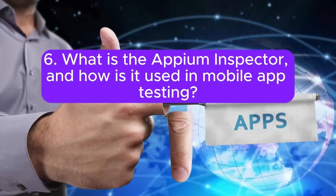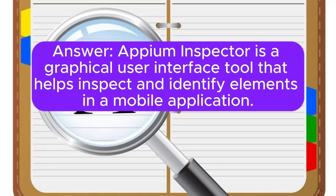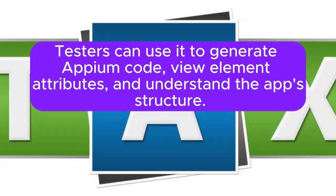6. What is the Appium Inspector, and how is it used in mobile app testing? Appium Inspector is a graphical user interface tool that helps inspect and identify elements in a mobile application. Testers can use it to generate Appium code, view element attributes, and understand the app structure.